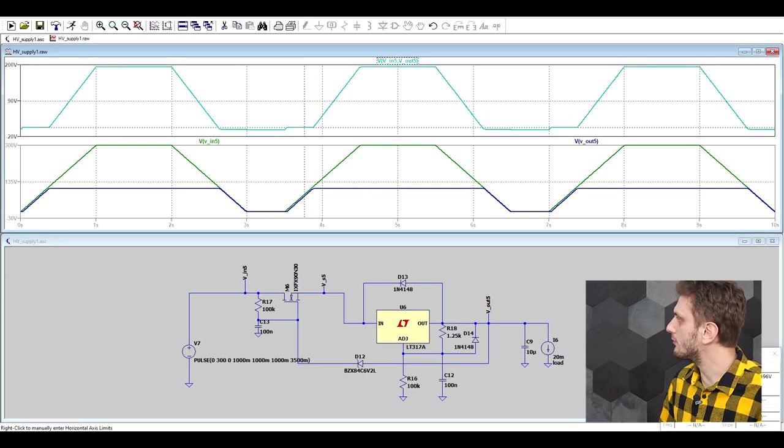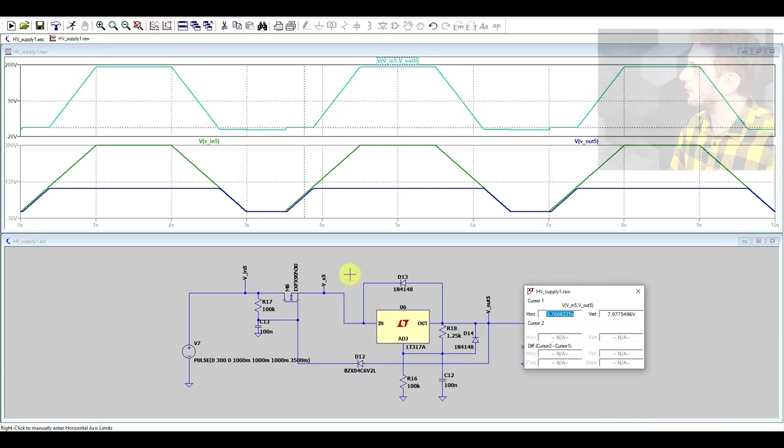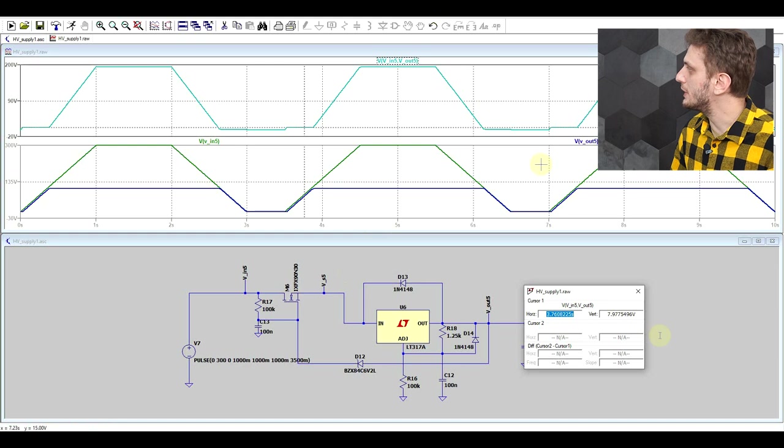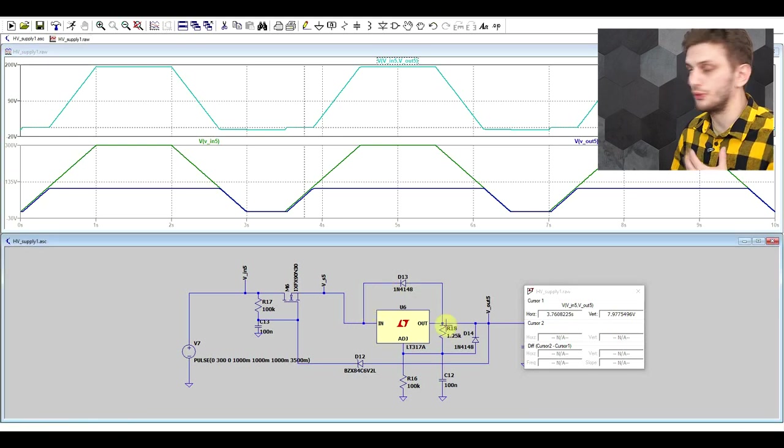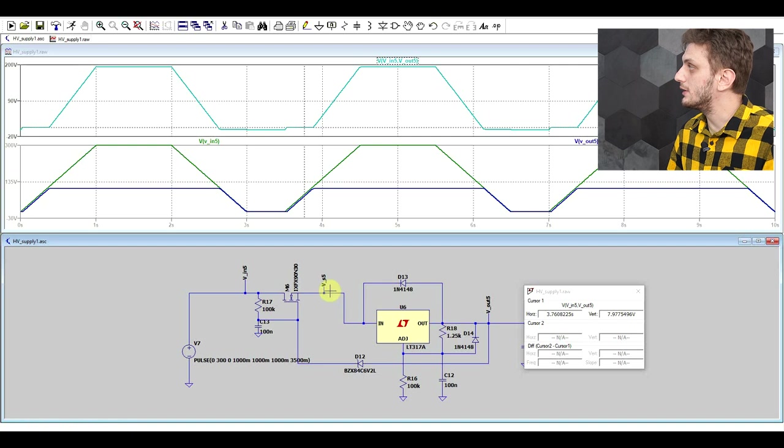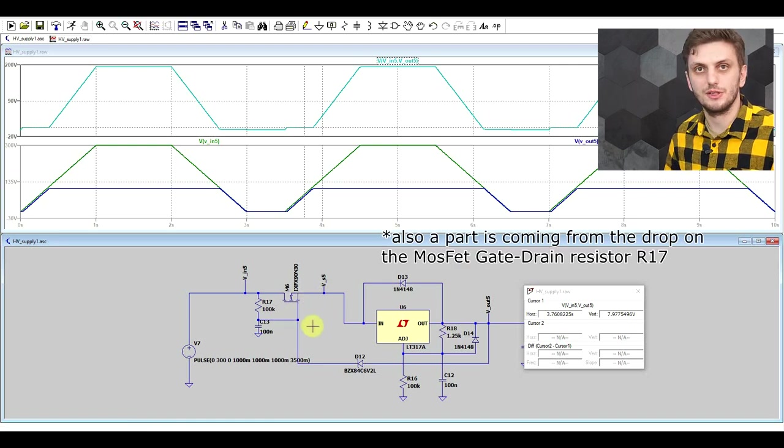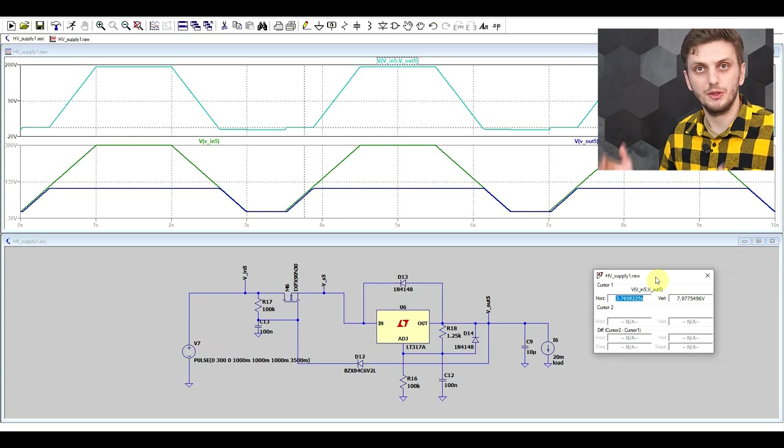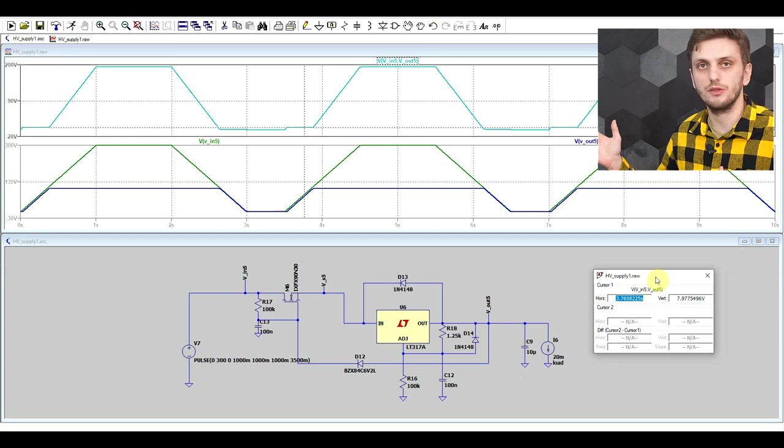But more interestingly, during the period in which the whole regulator would be saturated, so you would have your minimum voltage drop on it, we only have around 8 volts. So these 8 volts are coming from the roughly 3 volts dropping on the 317 and then a few more volts needed to drive the field effect transistor, so its minimum gate threshold voltage. So with this sort of arrangement we can get a minimum voltage drop on our regulator below 10 volts. So this will depend of course on the exact field effect transistor that is being used.